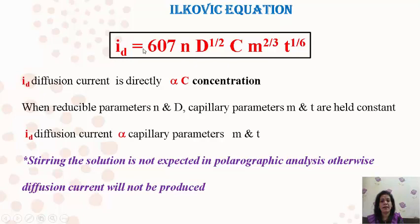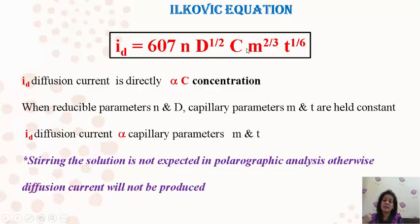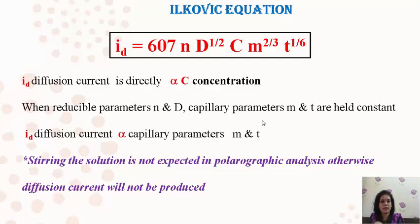From the Ilkovic equation, Id is directly proportional to concentration C when all other parameters — n, D, M, T — are constant. If capillary parameters like mass of mercury M and drop time T are changed, the Id value will vary accordingly. So Id depends upon capillary parameters M and T as well. An important precaution: you must never stir the solution under study during the analysis. If you stir the solution, diffusion current will not be produced. Keep the solution still — without stirring — just increase the applied voltage and measure the current produced.